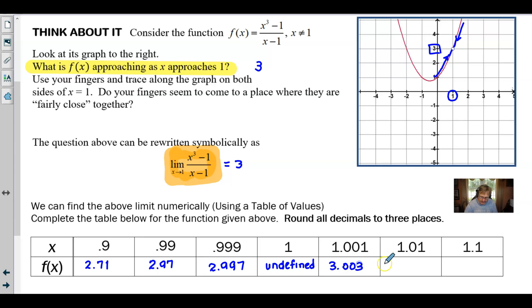3.003, 1.01 gave us 3.030, and then 3.31 is what we had when we plugged in 1.1. Now, what I want to do is try to draw your attention to the values that are closest to 1, because that's what this limit was all about, right?